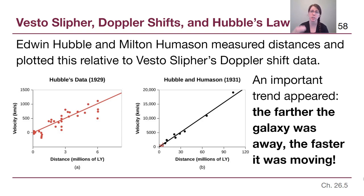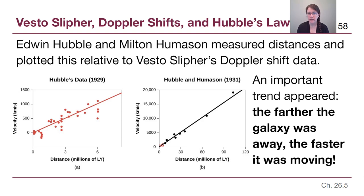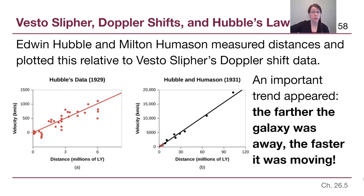All of those positive velocities mean objects are moving farther away from us. The red data points replicated across plots show how important it is to get a wide range of distances for a more accurate trend line. What we're seeing is something called Hubble's Law, where the trend line — especially in part b — can be described with a simple equation: velocity equals the slope of that line times the distance.